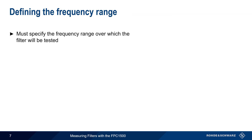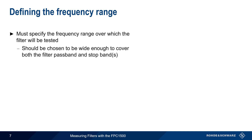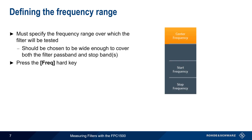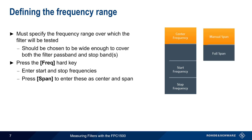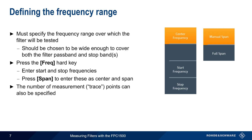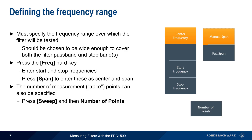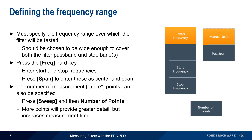We also need to specify the frequency range over which the filter will be tested. This should be wide enough to include both the filter pass band and some portion of the stop band. To define the frequency range, press the Frequency hard key and enter the start and stop frequencies. The Span key can also be used to enter these as center and span instead. The number of measurement or trace points over the span can also be specified by pressing the Sweep hard key and adjusting the number of points. A greater number of points will provide greater detail, but increases measurement time.